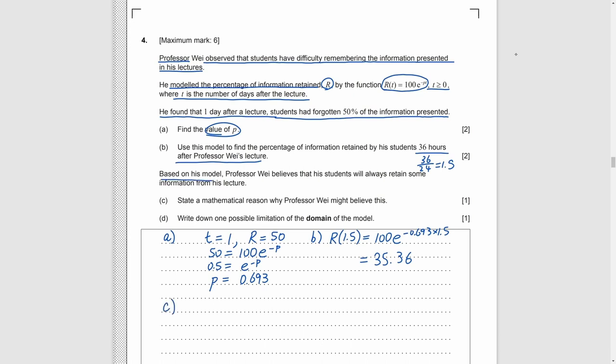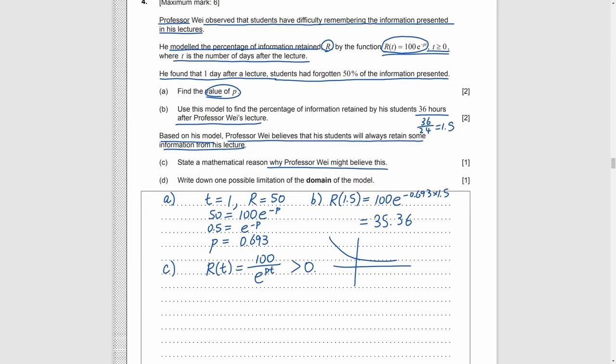Part C. The professor believes that there must be some information left whenever, and we need to explain that. It is because R is an exponential function, and we need to remember that all exponential functions are always positive. Part D, we need to write down the limitation of the domain of the model. So we need to think what value of T is not reasonable. T represents the days after the lecture, which cannot be infinite or very, very large, as we cannot live forever.